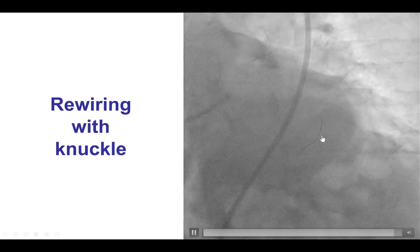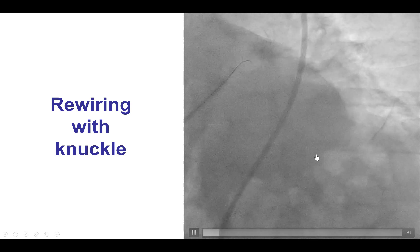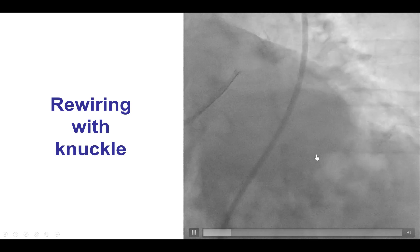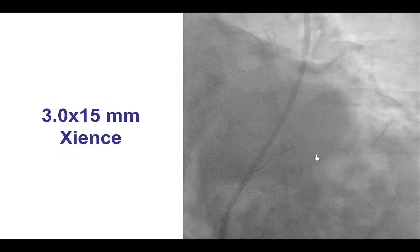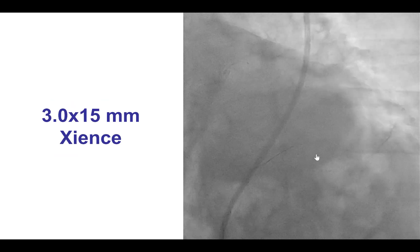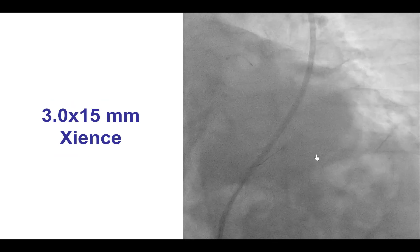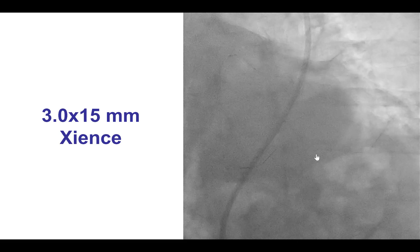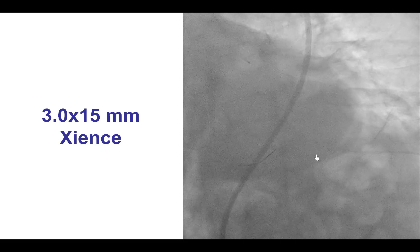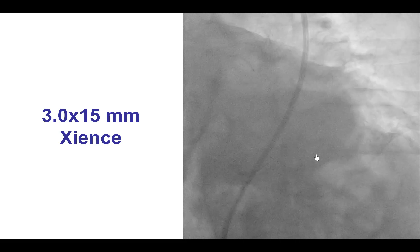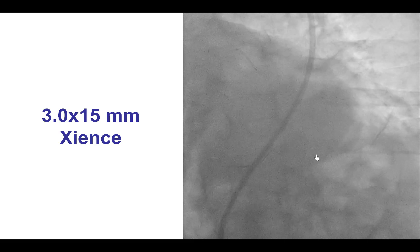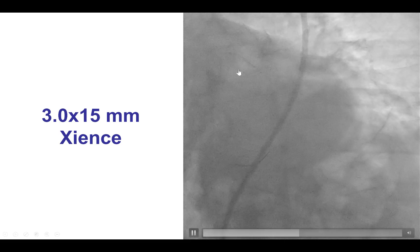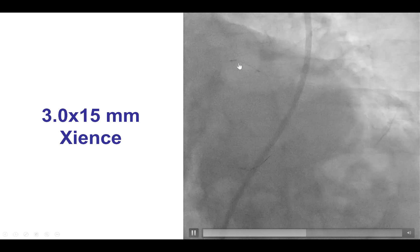Once again, we formed the loop, and that advanced distally into the vessel. Because there was no significant disease anymore at the origin of the obtuse marginal, we decided to not place a wire into the obtuse marginal, and we did additional attempts to deliver the stent.